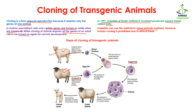We are going to allow this fused cell to divide normally, and as it divides it is going to form an embryo. When the embryo is formed, it is placed in the uterus of a foster mother — in this case a sheep — which will then harbor the baby. The baby's development takes place inside the body of this sheep.